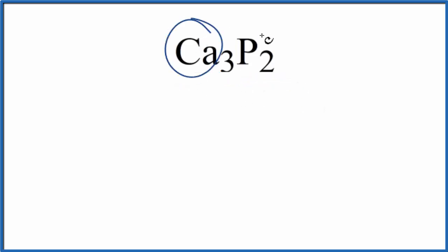So we have calcium that's a metal, the phosphorus is a non-metal. So this is going to be an ionic compound.